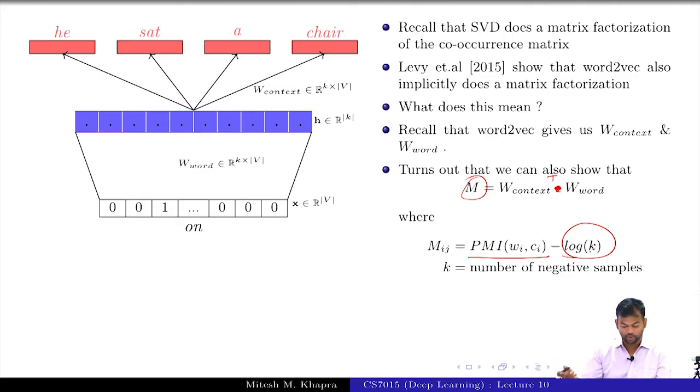They actually showed that whatever representations word2vec learns, it is actually doing a factorization of this matrix, where this matrix has a strong connection to the PMI matrix, and SVD also works with the PMI matrix.